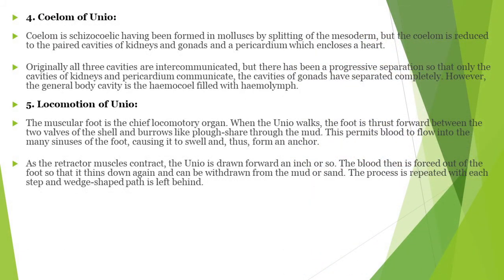The coelom of Unio is of the schizocoelom type — formed by splitting of mesodermal cells. Originally there are three cavities that intercommunicate, but there has been progressive separation so that only the cavity of the kidney and pericardium communicate; the cavity of the gonad has separated completely. The general body cavity is the haemocoel, filled with haemolymph.